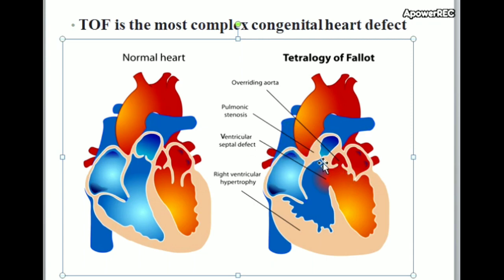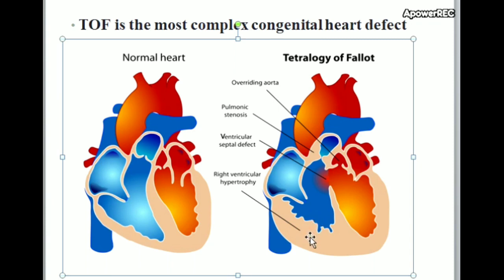Here you can see pulmonic stenosis — the pulmonary valve is narrow or too small. Then ventricular septal defect: a hole in the lower chambers of the heart, with an opening between the right and left ventricles. Then right ventricular hypertrophy — the abnormal enlargement of the muscle mass of the right ventricle.